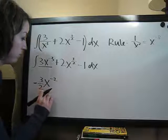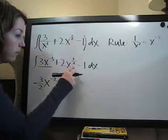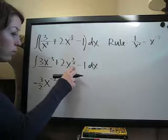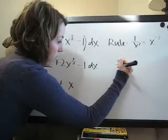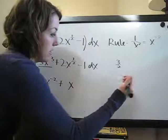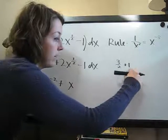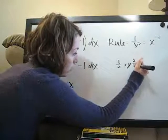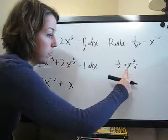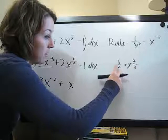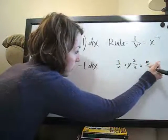Then we apply to this term, x to the 3 halves. We want to add 1 to this exponent. So 3 halves plus 1 might not be immediately apparent. The way that we deal with that, 1 you can change to 2 over 2 so that the denominators here are the same and you can easily add them. So the result there is 3 plus 2, which is 5 halves.